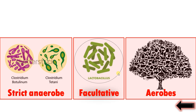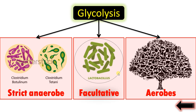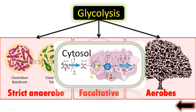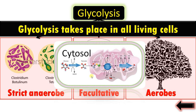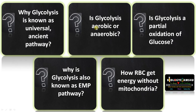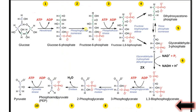All other organisms — algae, fungi, plants, and animals — are aerobes that require oxygen for survival. In all these organisms there is a common pathway called glycolysis for energy production, where glucose is converted to pyruvate with the release of energy. It occurs in the cytosol of the cytoplasm. Therefore, glycolysis takes place in all living cells — that is why it is called the universal, common, ancient pathway.